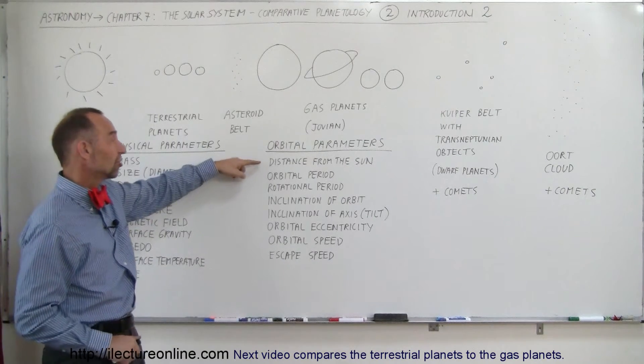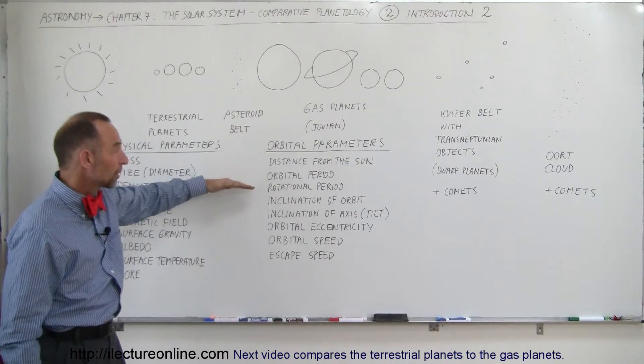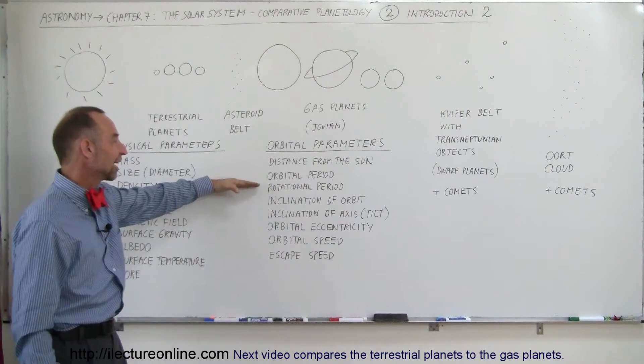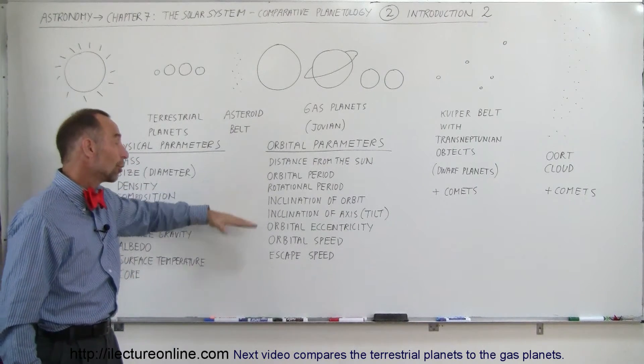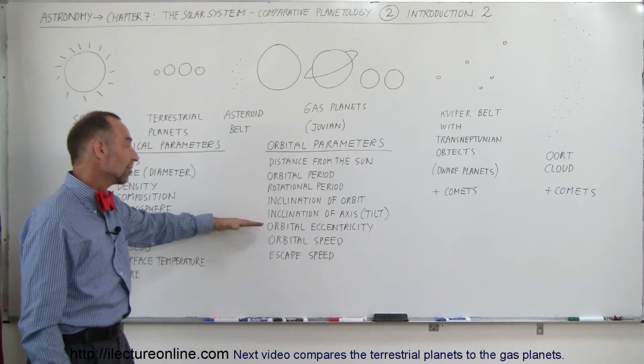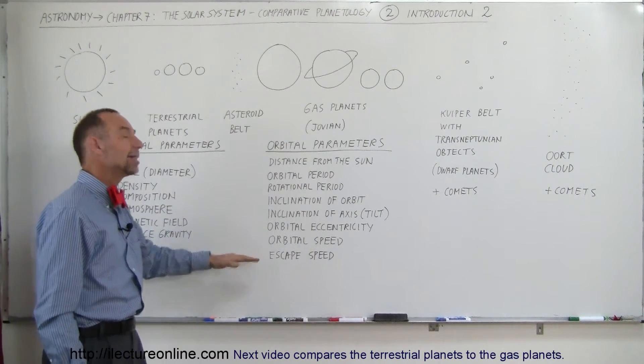Then we have the orbital parameters such as the distance from the Sun, the orbital period, the rotational period, the inclination of the orbit, the inclination of the axis or tilt of the planet, the orbital eccentricity, the orbital speed and the escape speed.